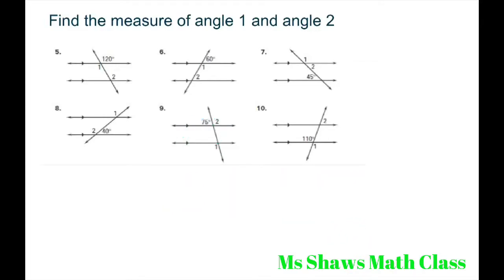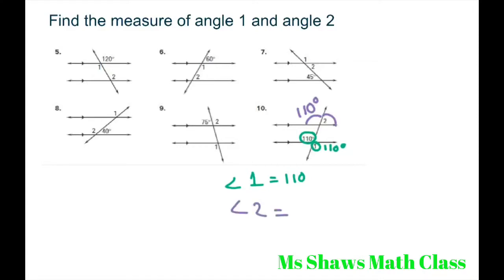And for the last one, alternate interior angles are congruent, so this angle here equals 110 degrees. So angle 1 equals 110 degrees. Alternate exterior angles are also congruent, so that's 110 degrees. Therefore, angle 2 equals 180 degrees minus 110 degrees, which equals 70 degrees. And that's it. Thank you. Have a nice day. Bye-bye.